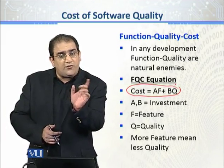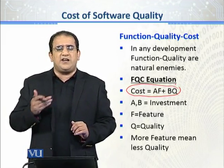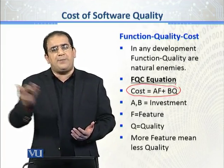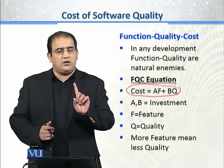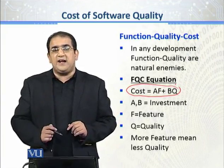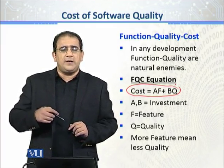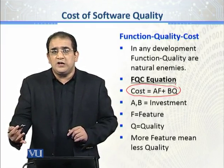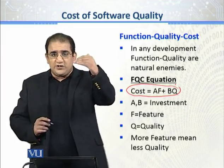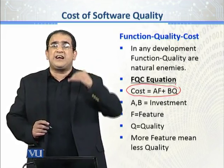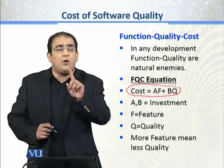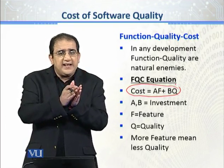اب ہم development cost کو further break کرتے ہیں تو وہ translate ہوتی ہے into number of features، اور انہی features کے against آپ QA کی cost نکالتے ہیں۔ Try to understand the relationship — کیونکہ اس equation کو دیکھ کر لگتا ہے کہ جتنی زیادہ features ہوں گی اتنی زیادہ quality ہوگی — ایسا نہیں ہے۔ جتنے زیادہ features ہوں گے، اتنی quality کم ہوگی — from the cost viewpoint.